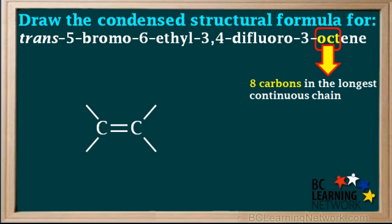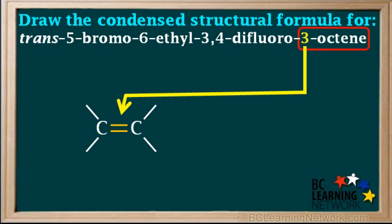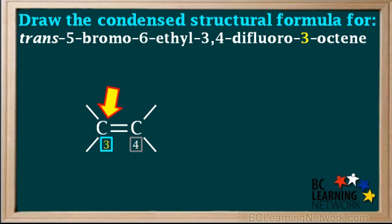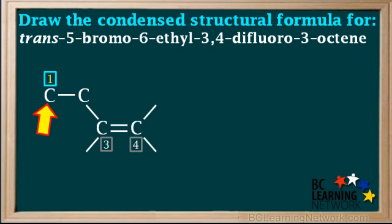The 'oct' in octene means there are eight carbon atoms in the longest continuous chain. The three in front of the octene means that one of the carbon atoms attached to the double bond is carbon number three. When drawing structures, we can count carbon atoms in the longest chain starting from either the left or the right side. Starting from the left is more familiar, so we'll do that. If this is carbon number three, then this is carbon number four. Since this is carbon number three, we can add two more carbons to the left of it — carbon number one and carbon number two.